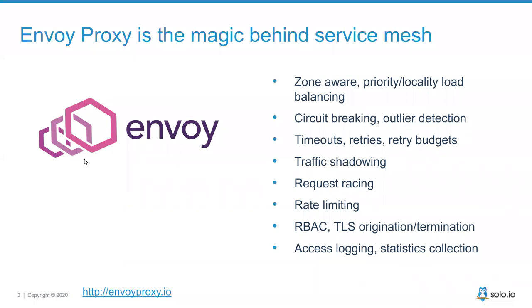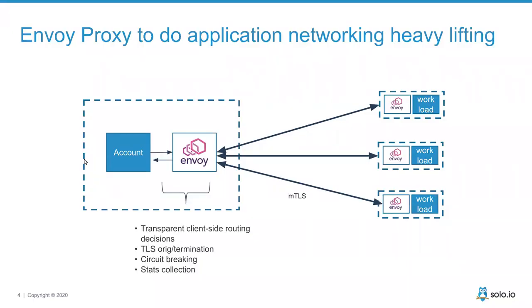Envoy is a top-level graduated CNCF project and in practical service mesh implementations, it becomes that interceptor — the mechanism through which network communication travels. Envoy is where we implement things like client-side load balancing, service discovery, timeouts, retries, circuit breaking, retry budgets, telemetry collection, rate limiting, and security enforcement at the proxy level.